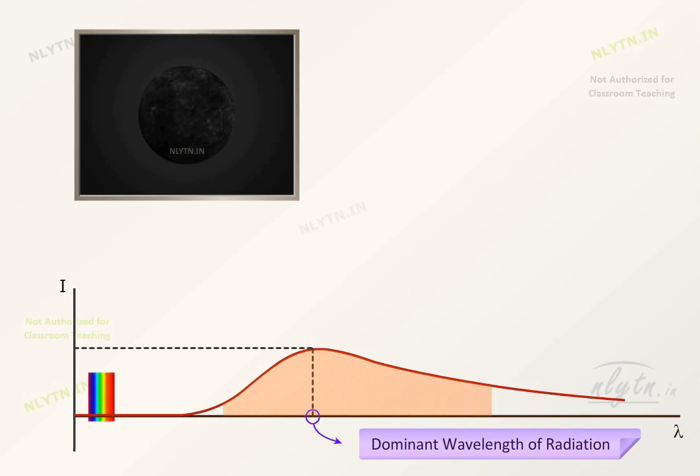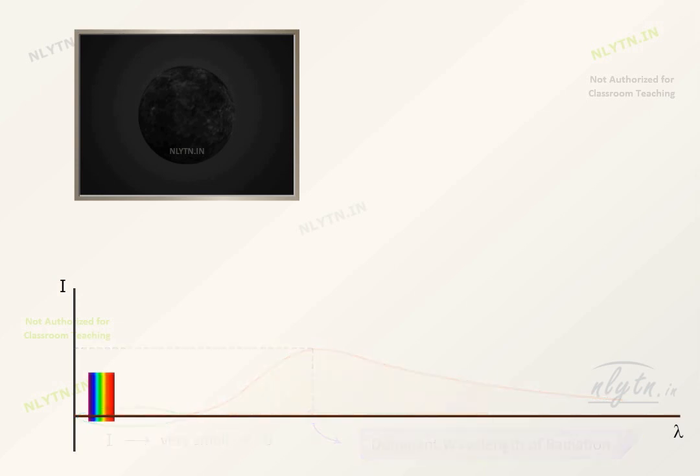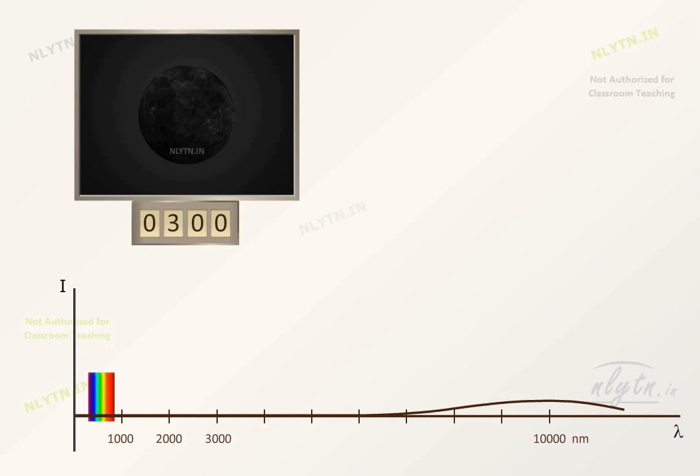The intensity of radiation for other wavelengths is very small, though it is not zero. At room temperature, that is around 300 kelvin, the dominant wavelength of radiation and most of the energy is distributed in the infrared region. And the intensity of radiation in the visible region is very small. And that is why thermal radiations are not visible for objects at normal temperatures.